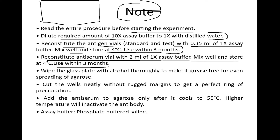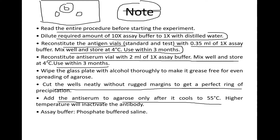The gel preparation needs to be done absolutely correctly so that wells can be punched and antigens can react to form precipitin rings. Proper mixing with buffer and distilled water is critical. Wells must be cut neatly. Importantly, antiserum should only be added to the agarose gel after it cools to 55°C, because higher temperatures will inactivate the antibody. The phosphate-buffered saline (PBS) buffer is mixed with the antiserum.